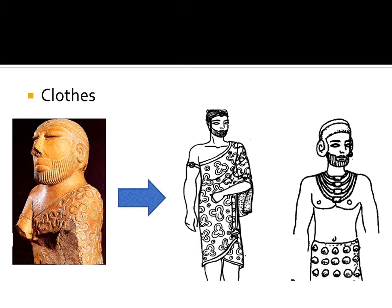They mainly used cotton cloths, which they grew and made themselves. They were also familiar with woolen clothes. Since needles made of metal and ivory have been found, we can assume that they wore stitched clothes, although most common people wore unstitched clothes. Stitched clothes may have been a luxury for the upper class during that time.